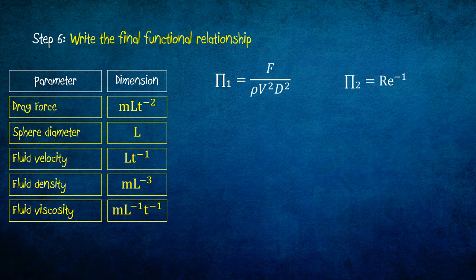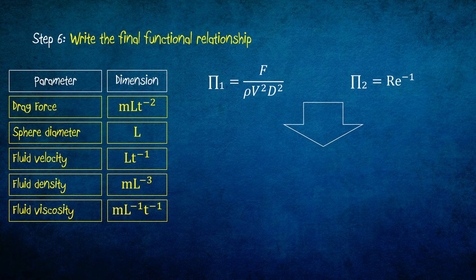Finally, step 6 is to write the final functional relationship. We have both the expression for pi 1 and pi 2. Pi 1 equals f over rho v squared d squared. Pi 2 equals Reynolds number power negative 1. By taking the relationship in the form of pi 1 as a function of pi 2, the final relation is f over rho v squared d squared is a function of Reynolds number.